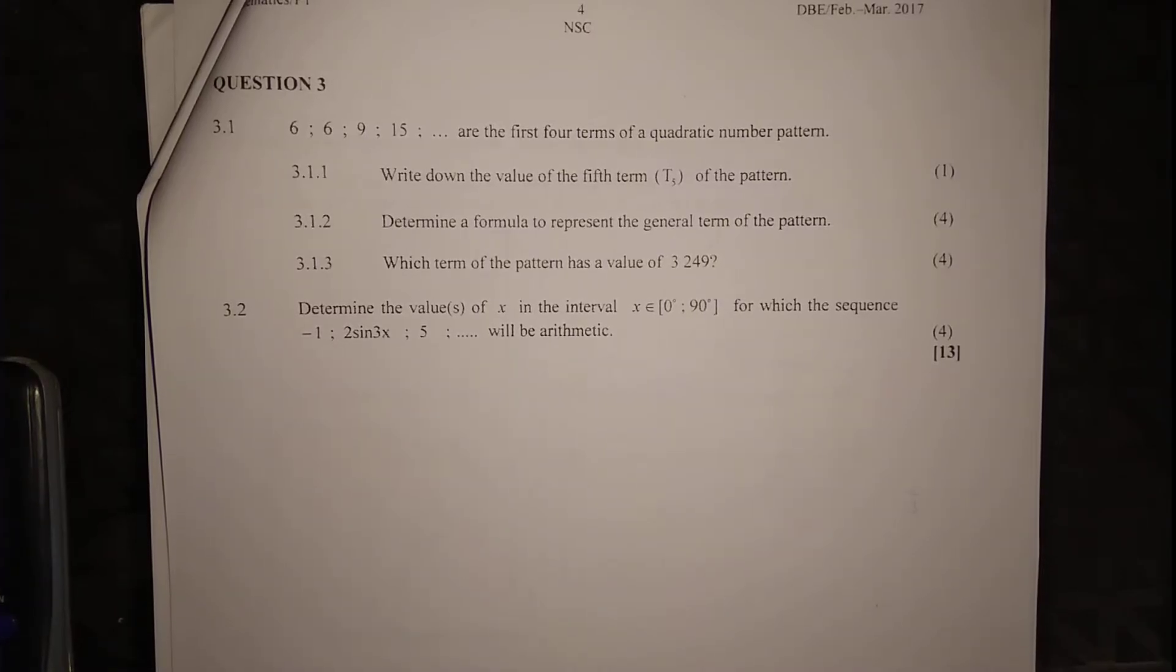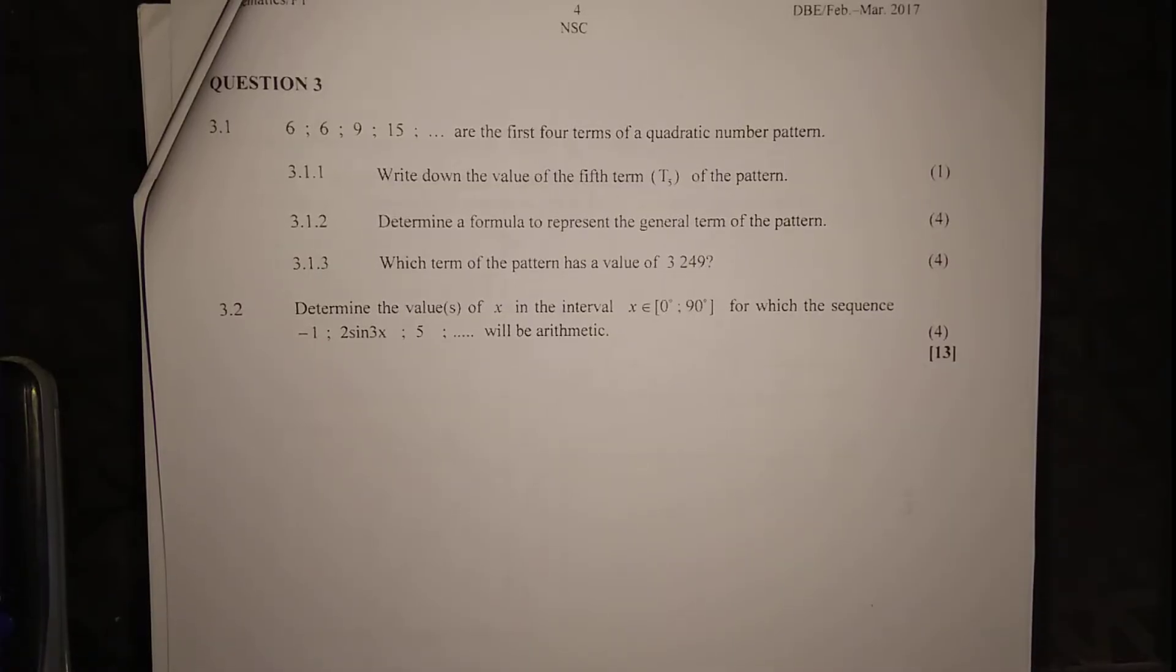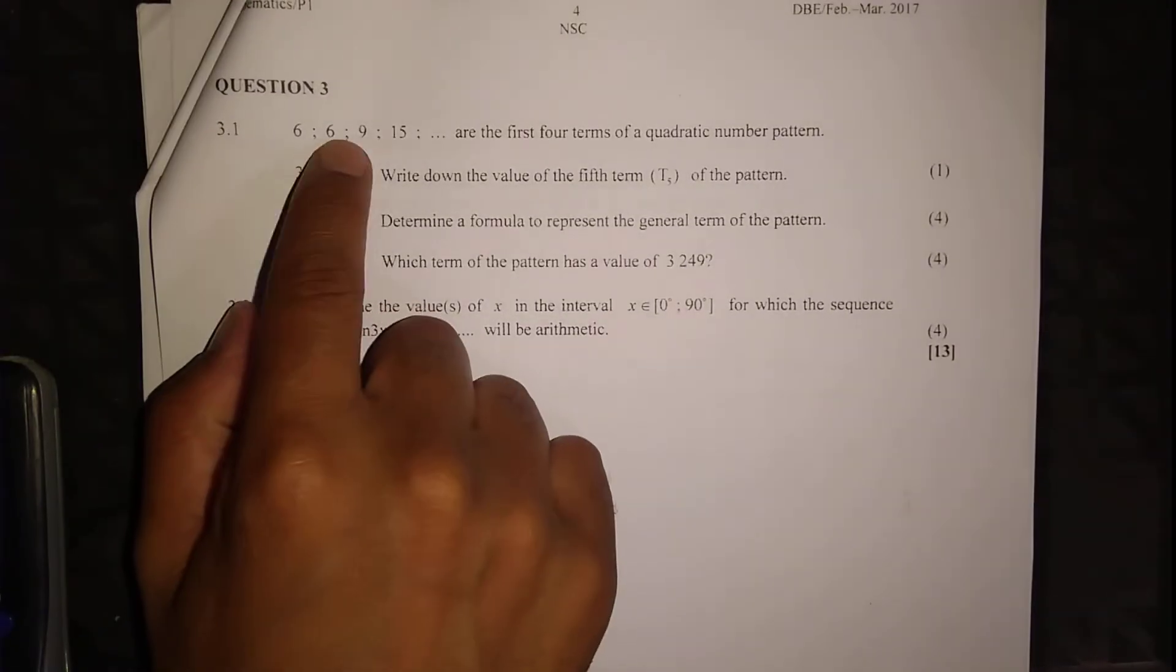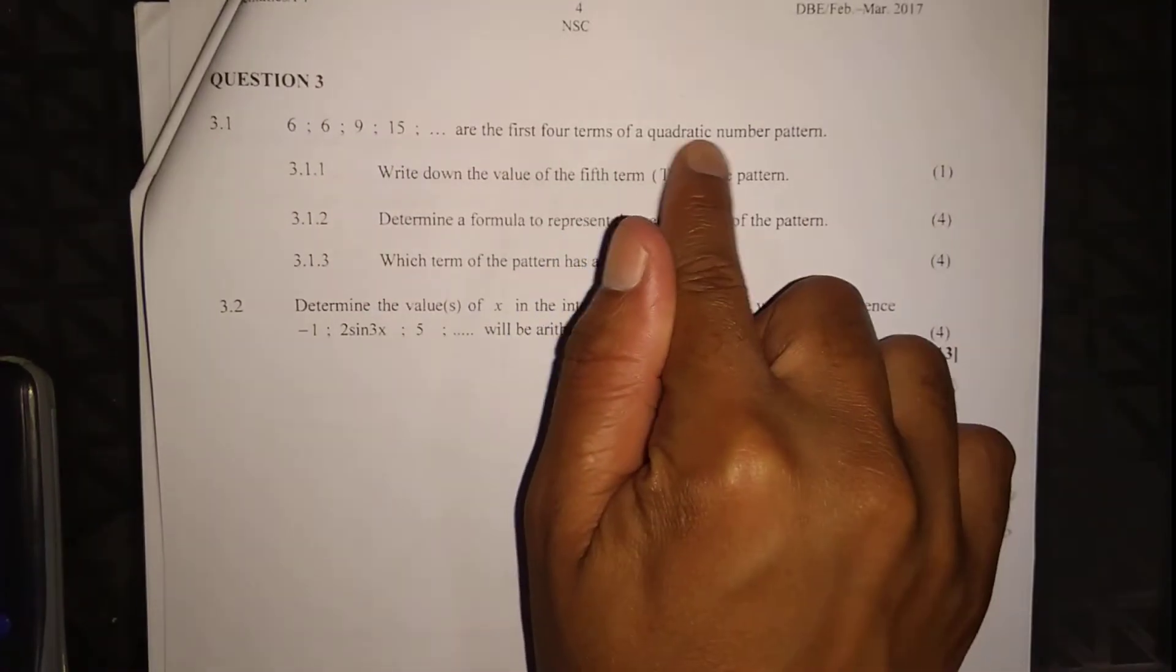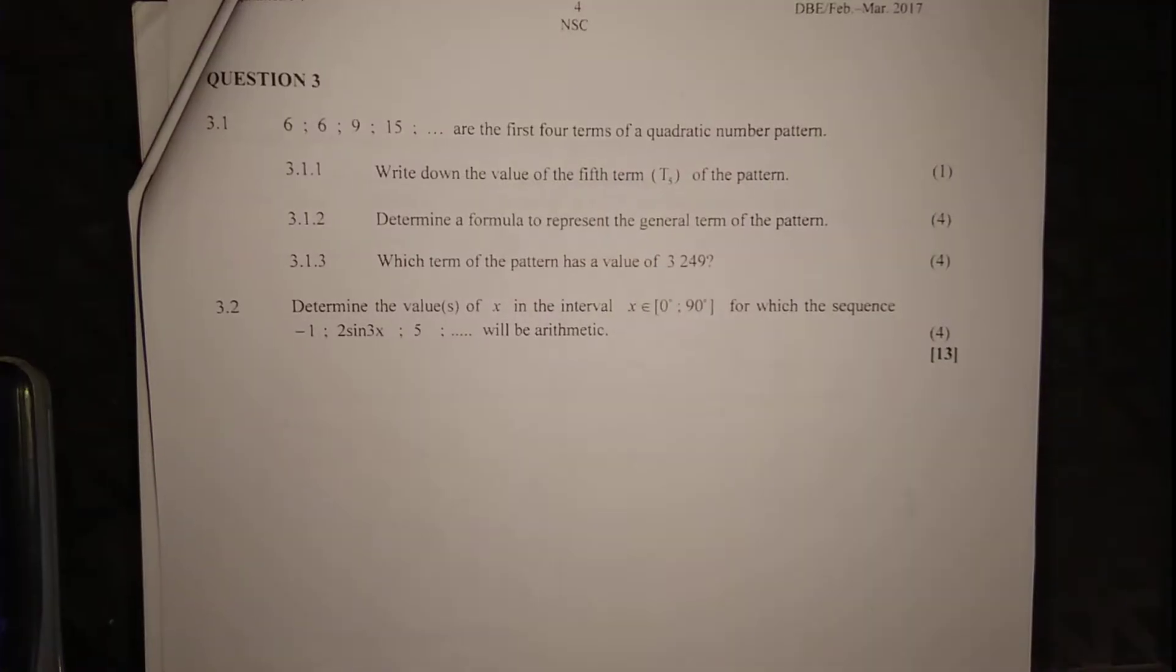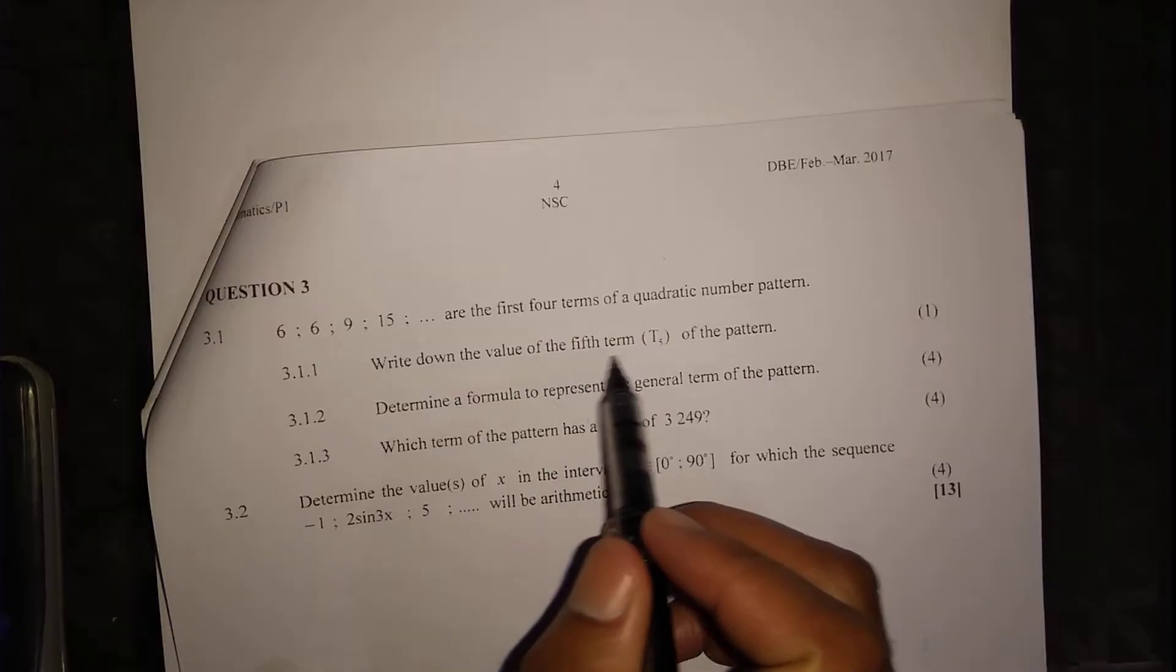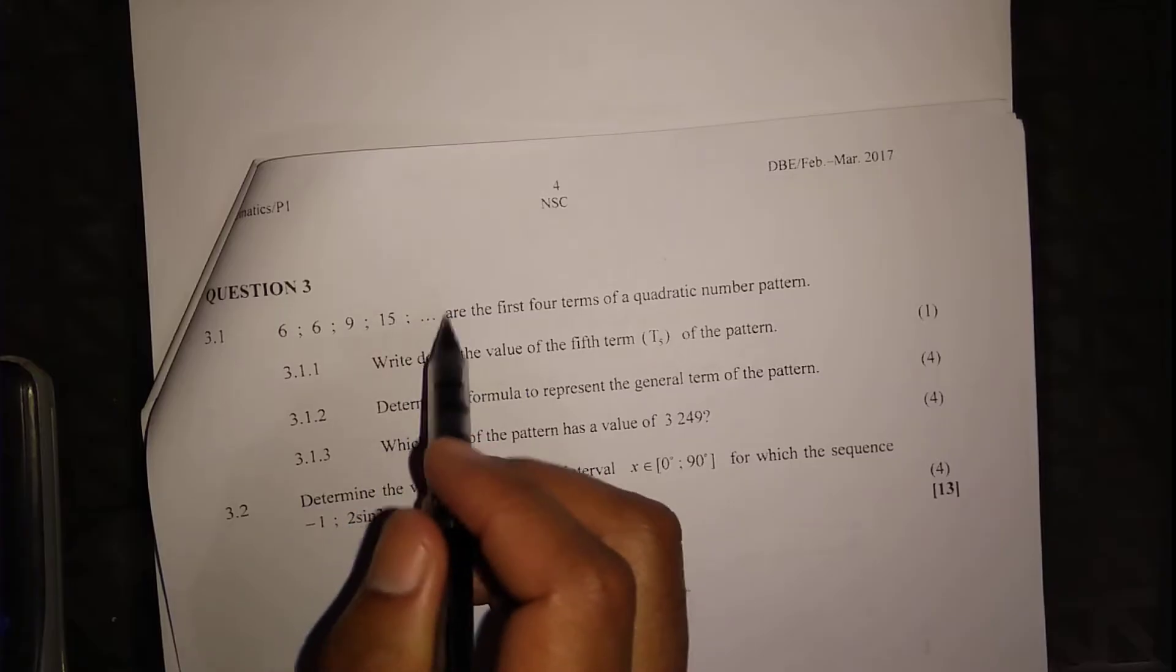Alright, before we get to the pendulum question, in the description below I'll link to many of my videos and the question paper. I'm only doing Question 3. Question 3.1.1: Write down the value of the fifth term. Here are the first four terms of a quadratic number pattern: T1, T2, T3, and T4. We need to find the fifth term.